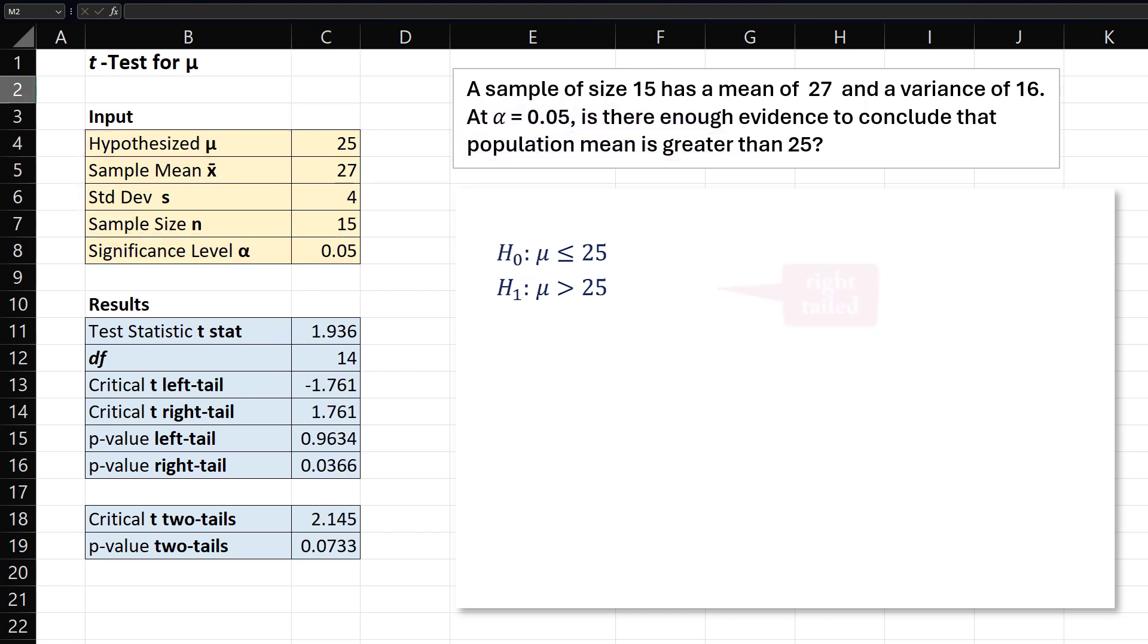Now this is a right-tailed or upper-tailed test, since the alternative hypothesis has a greater than sign. In the results here, we can see the critical value for the right-tailed test is 1.761. We will reject the null hypothesis if the test statistic is greater than 1.761.